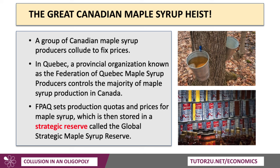A really good example many students use is OPEC, but I would go to Canada and look at the Canadian maple syrup cartel. In Quebec, there's a provincial organisation known as the Federation of Quebec Maple Syrup Suppliers, and they really do control the majority of supply in Canada. They set production quotas and prices for maple syrup, which is then held in a kind of buffer stock or strategic reserve — the Global Strategic Maple Syrup Reserve. Limiting supply can help to stabilise and keep prices high, and as you may know, Canadian maple syrup is not cheap.